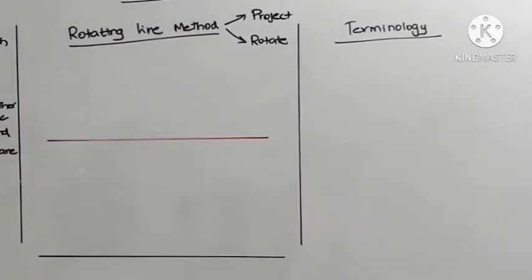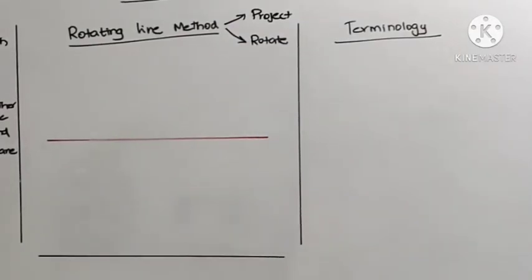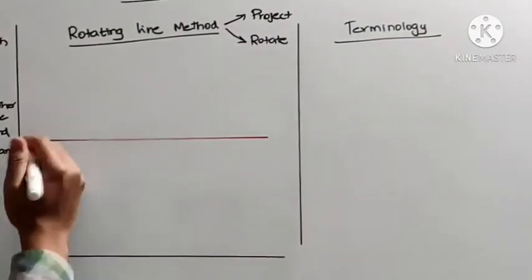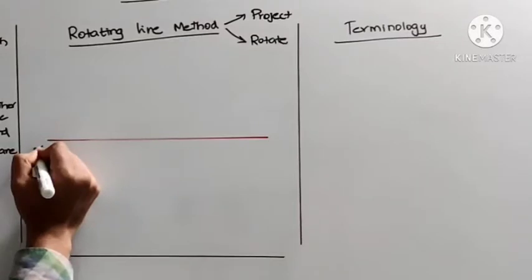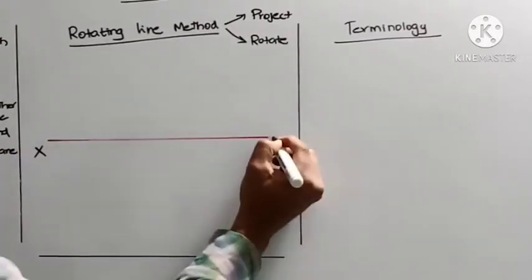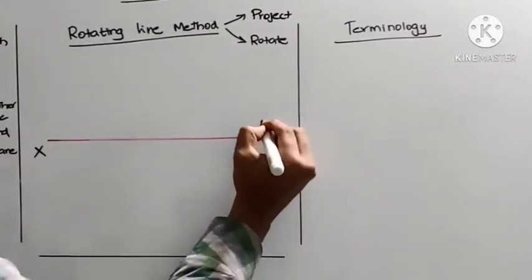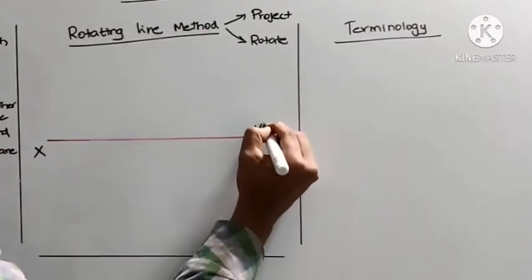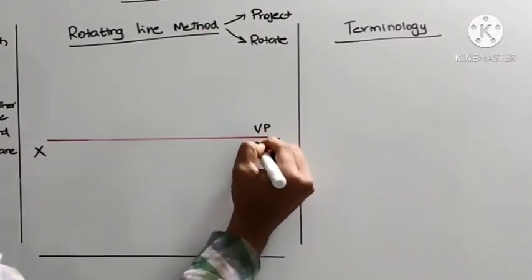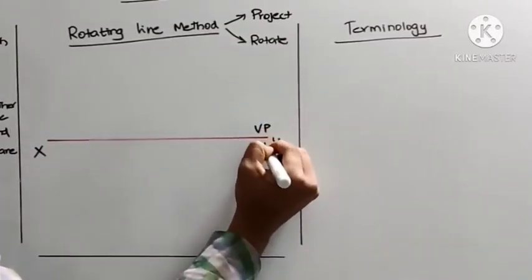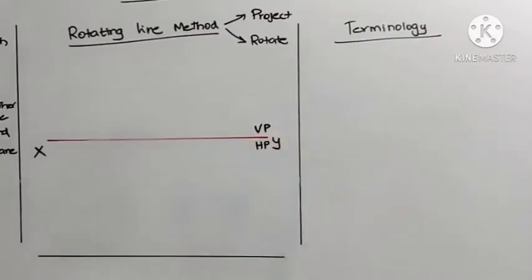This is my reference line. We are going to use first angle projection, as I already mentioned. In the first angle projection, this will be my vertical line and this will be my horizontal line.